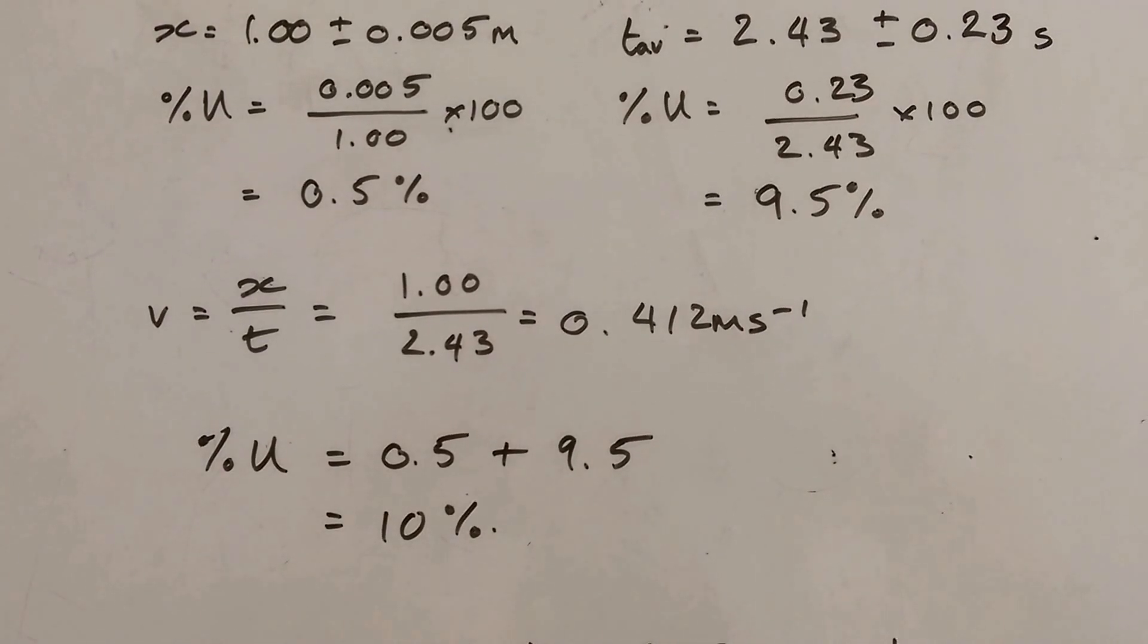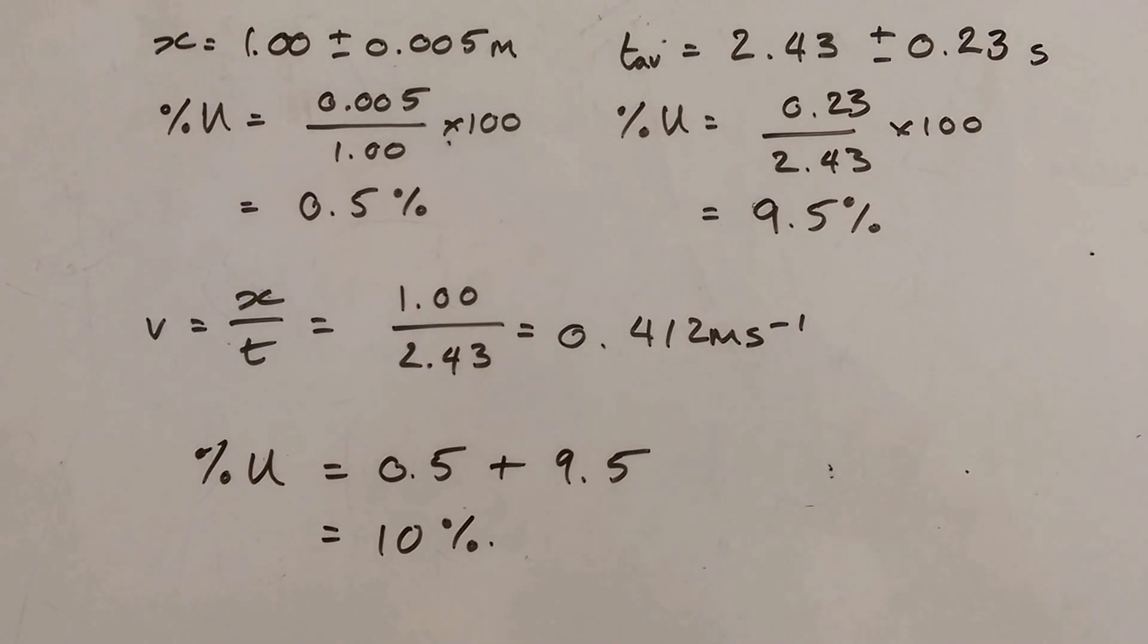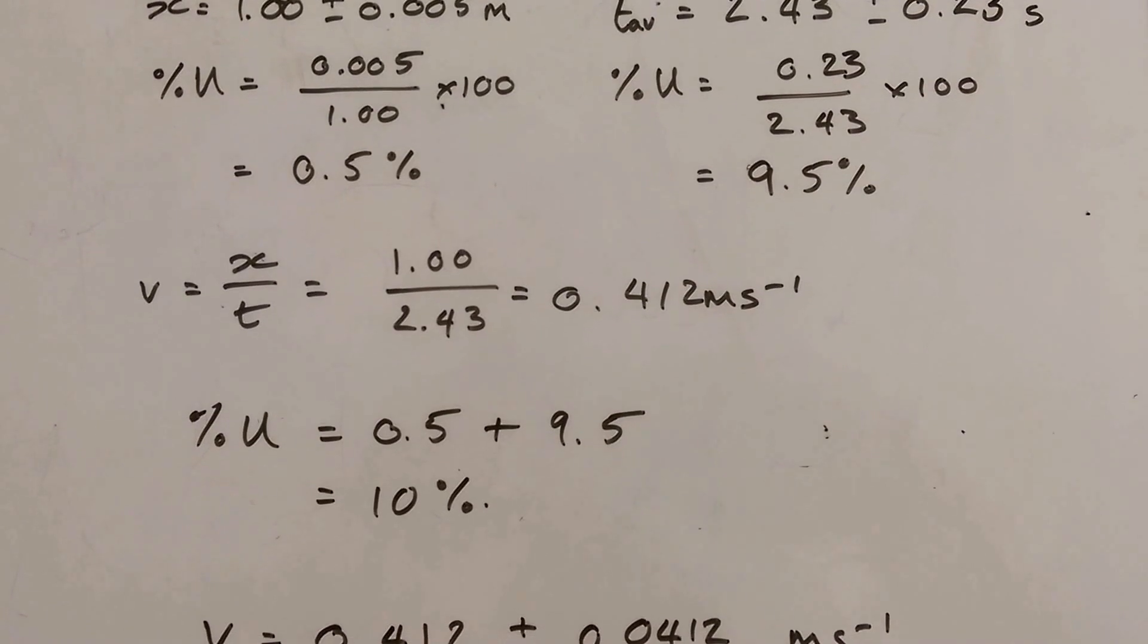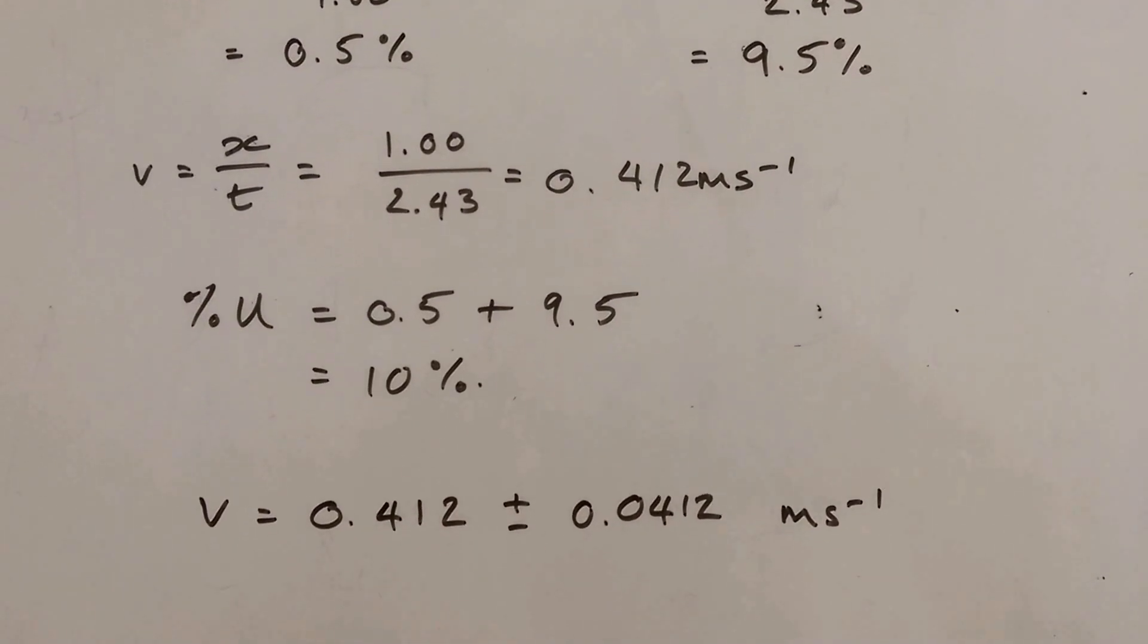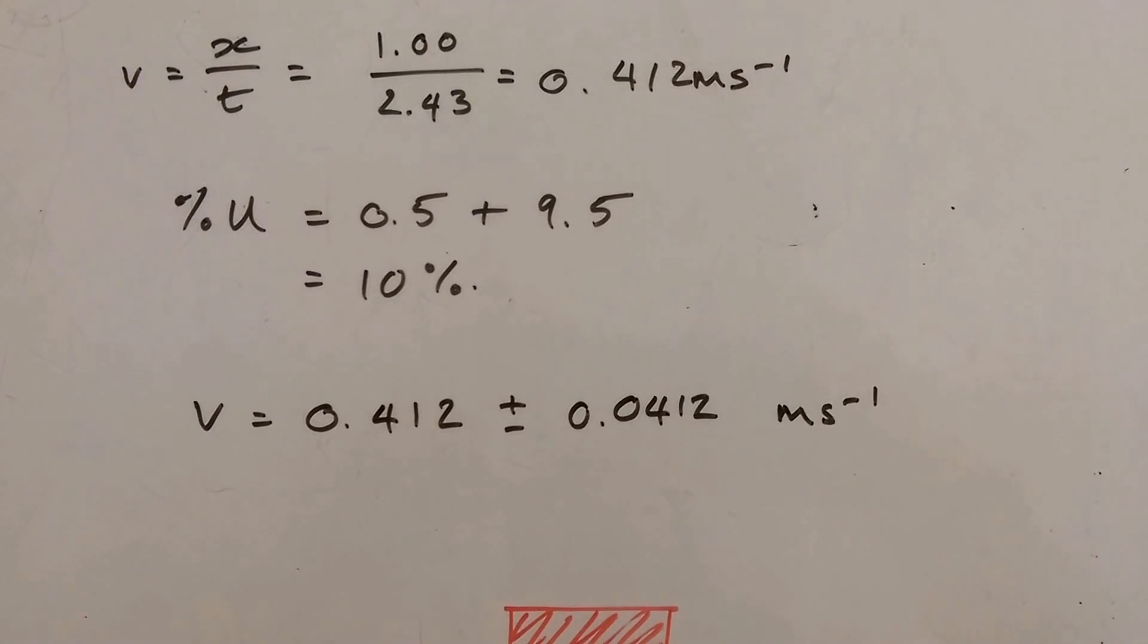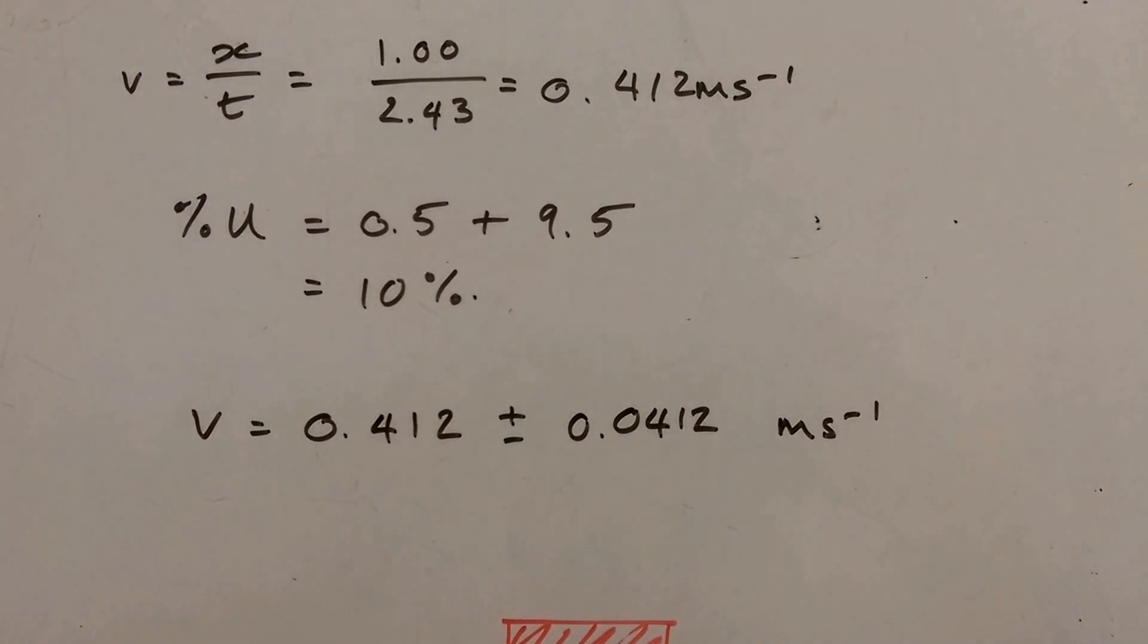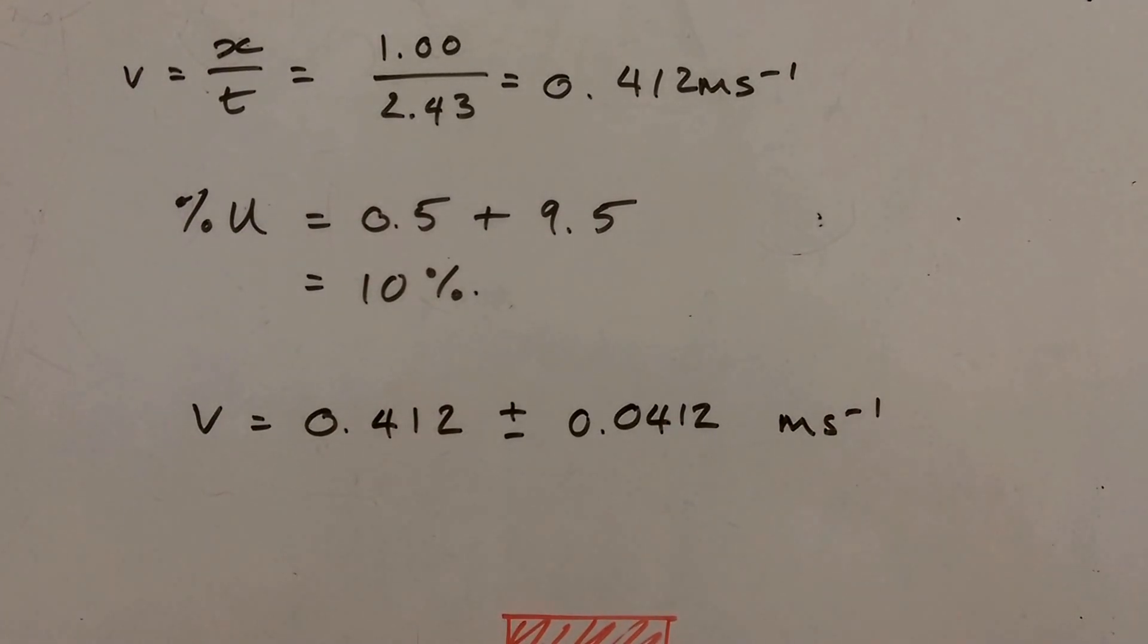My percentage error though is actually the two percentage errors of my measured values added together. So 0.5% from the measured value of length and 9.5% from the measured value of time. 10% error. So when I quote this in my results table, I'm going to need to say that the velocity is 0.412 plus or minus 0.0412 metres per second.